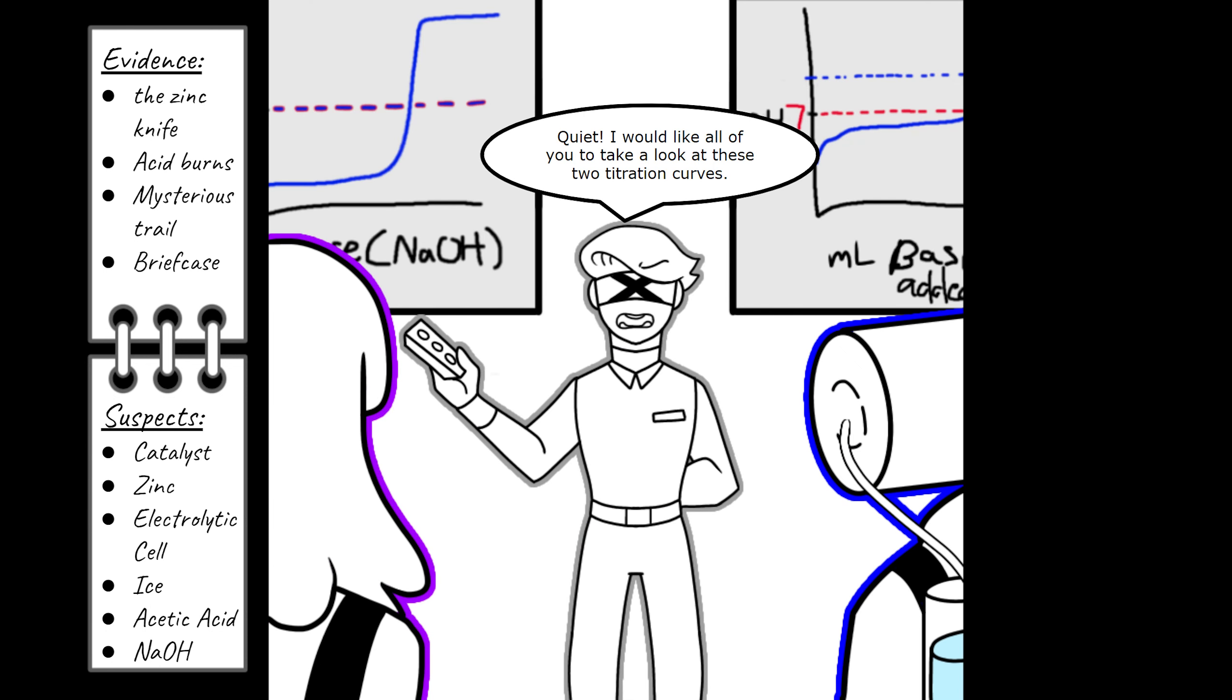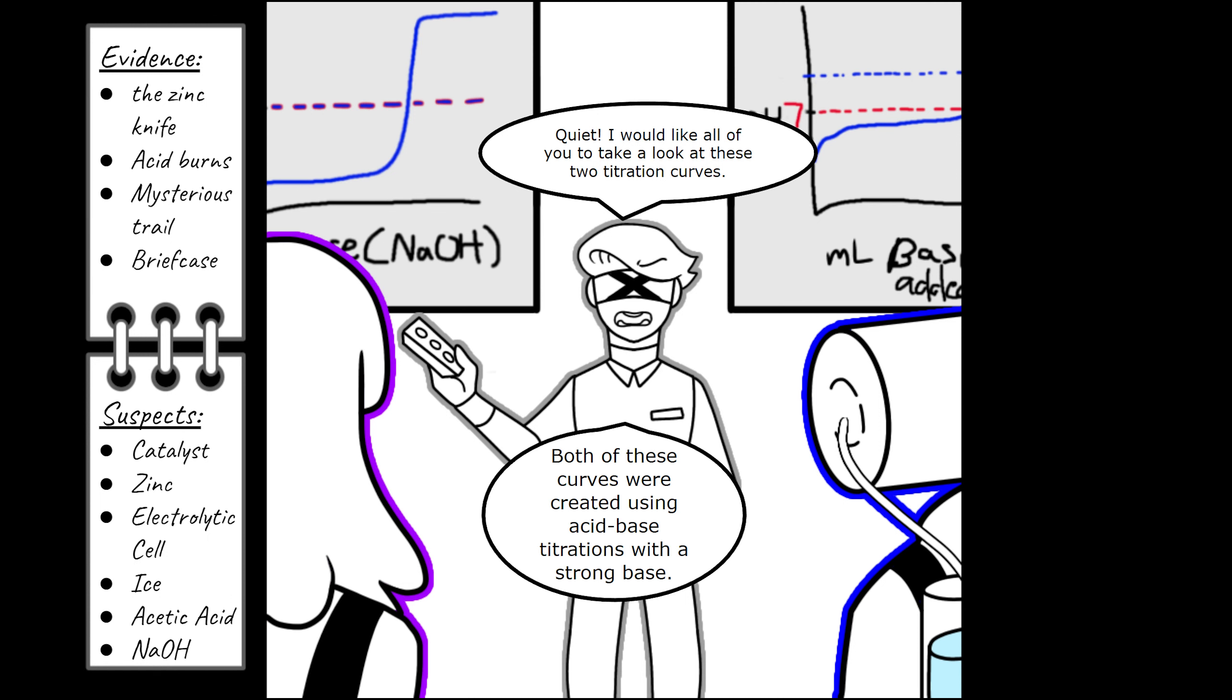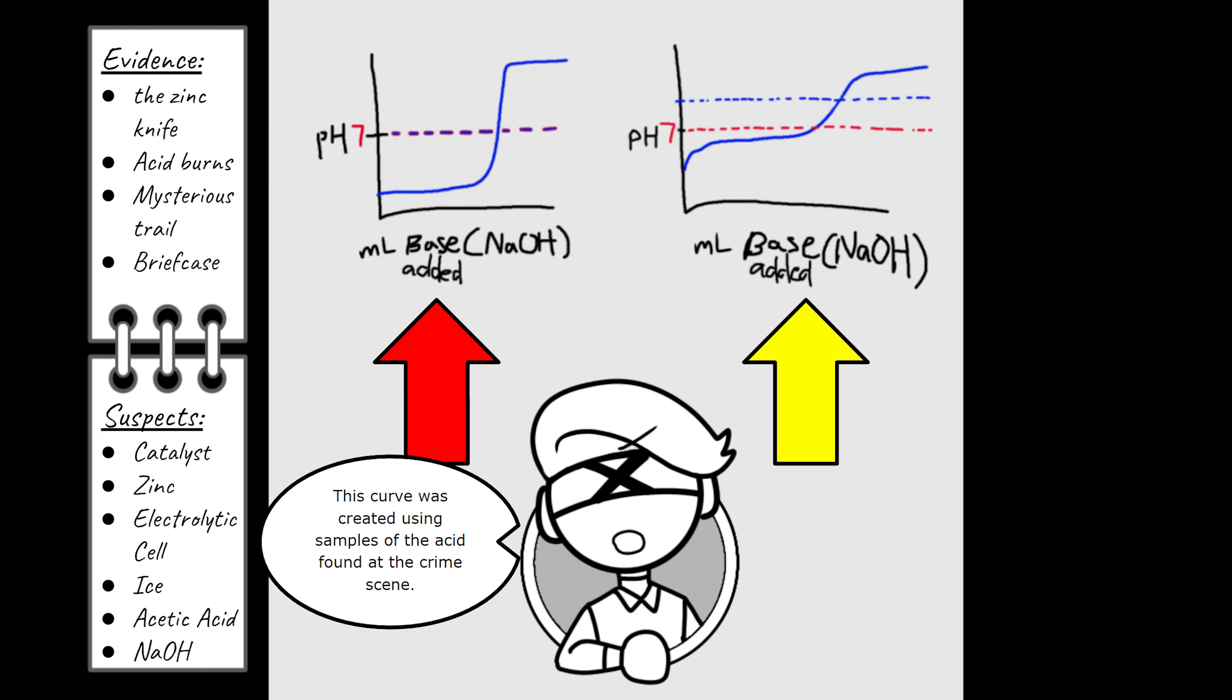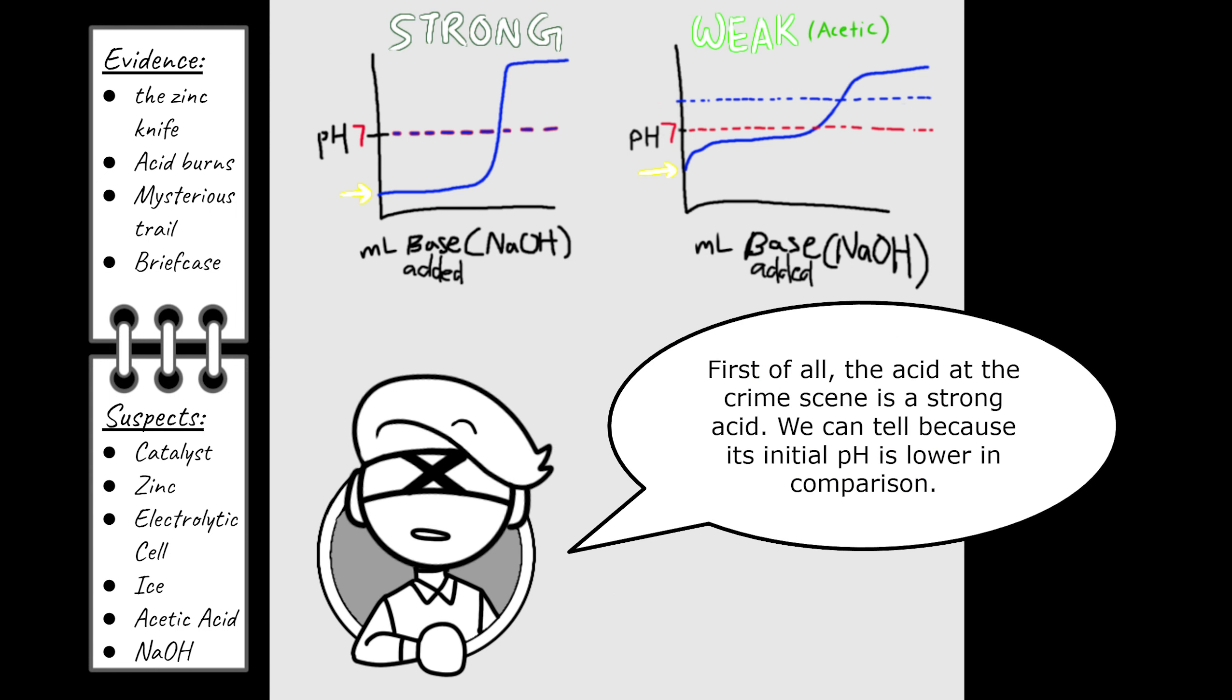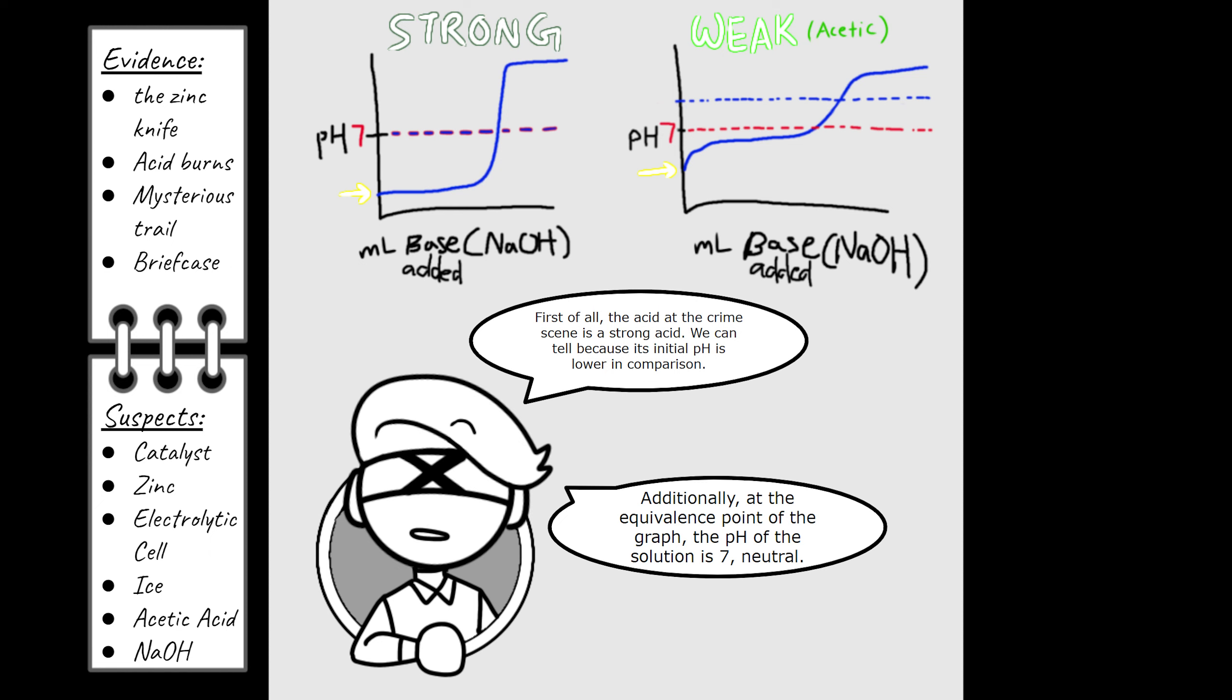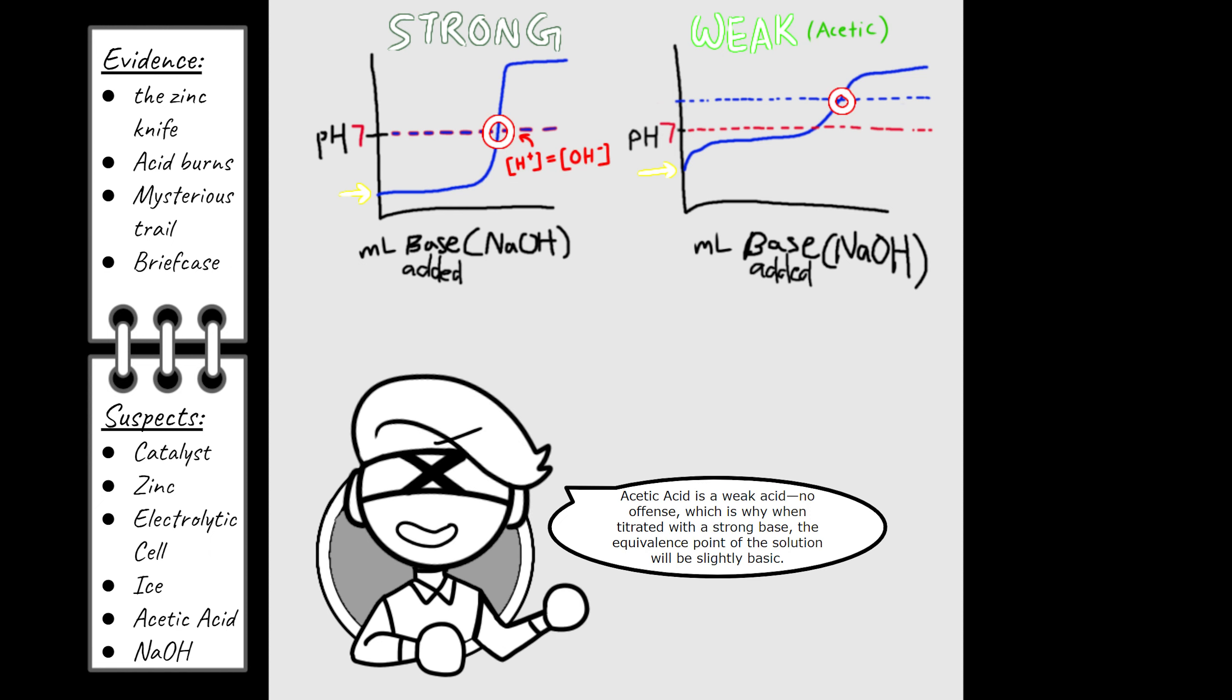I would like you all to take a look at these two titration curves. Both of these curves were created using acid and base titrations of the strong base. This curve was created using samples of the acid found at the crime scene. Now this titration curve was made with acetic acid. Notice anything? First of all, the acid at the crime scene is a strong acid. We can tell because its initial pH is lower in comparison. Additionally, at the equivalence point of this graph, the pH of the solution is 7, neutral. Acetic acid is a weak acid, no offense, which is why when titrated with a strong base, the equivalence point of the solution will be slightly basic.